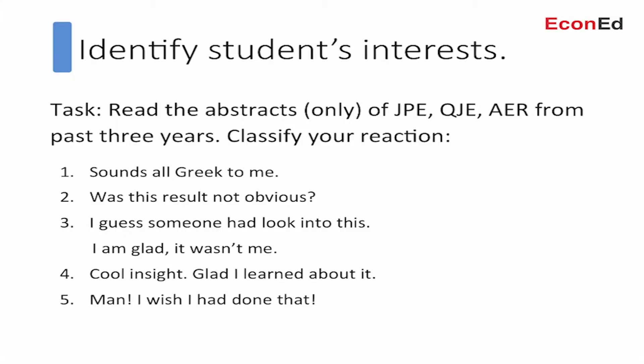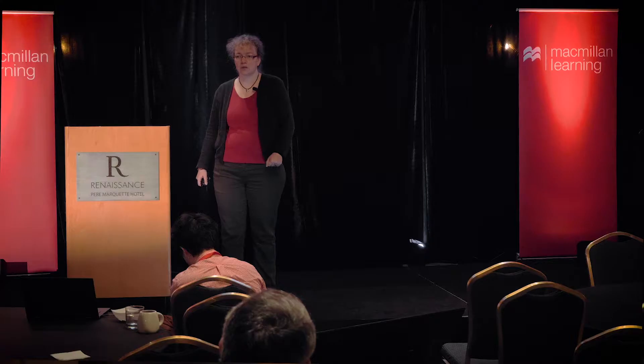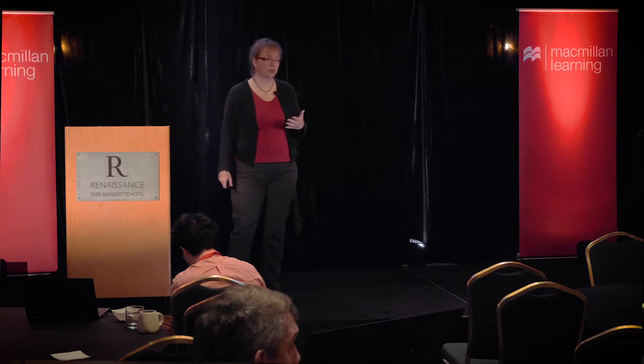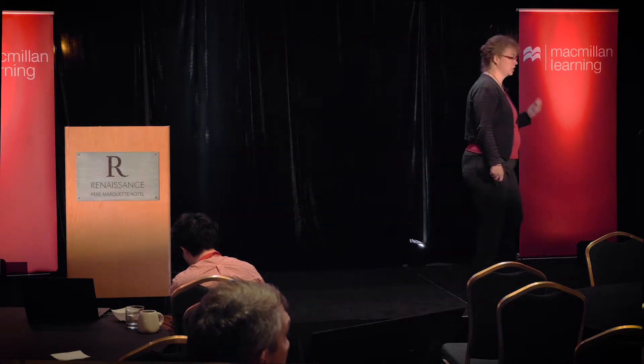To identify the student's real interest, I give them this task: read all the abstracts — abstracts only — of all the papers published in the JPE, QJE, or AER in the past three years. While reading, classify your reaction according to five criteria: one, sounds all Greek to me; two, wasn't this result obvious?; three, I guess someone had to look into this and I'm glad it wasn't me; four, that was a cool insight, glad I learned about it; and five, man, I wish I had done this. Even just giving students the permission to judge, evaluate, and record their personal response to academic writing engages them and changes their reading experience.